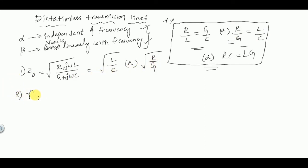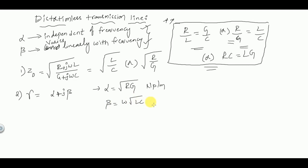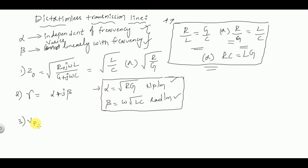The propagation constant gamma equals alpha + jβ. Applying the distortionless condition, we get alpha equal to √(RG) nepers per meter, and the phase shift constant beta equal to ω√(LC) radians per meter. The phase velocity Vp is given by ω/β, which equals ω / (ω√(LC)), giving 1/√(LC) meters per second.